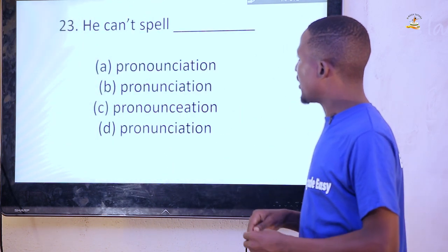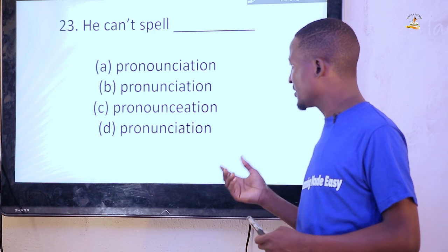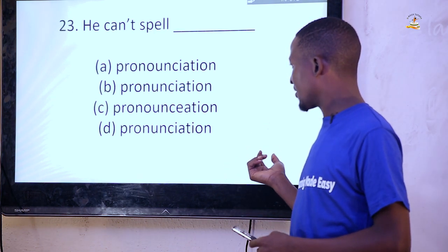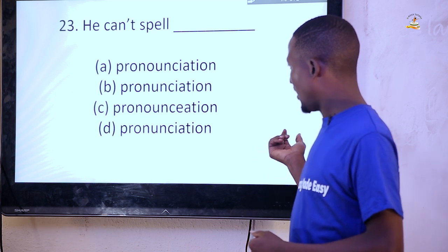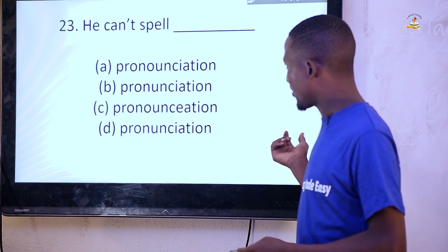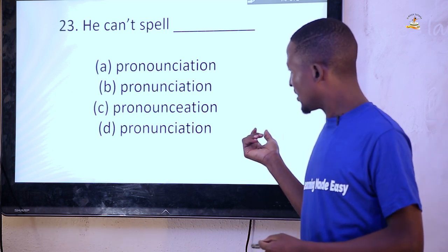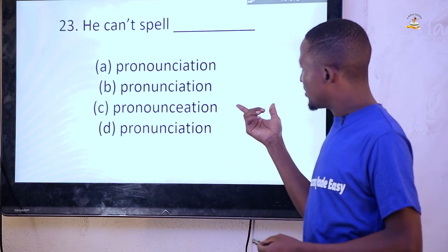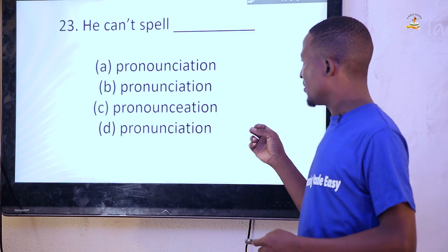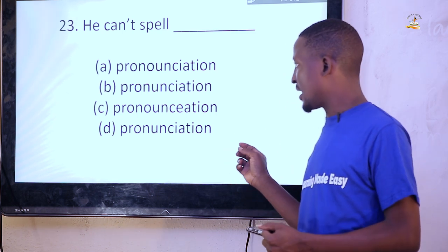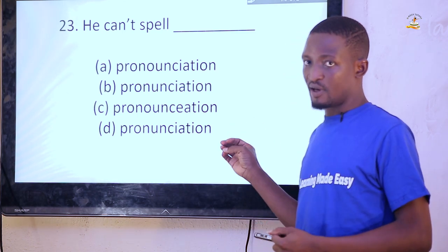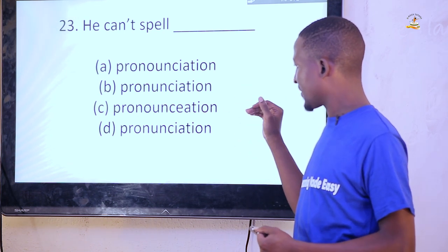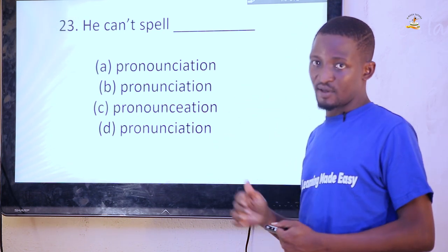This is a question on spelling — pronunciation. Options B and D are spelled the same way. There should be no letter O missing. P-R-O-N-U-N-C-I-A-T-I-O-N — that is 'pronunciation'. So both option B and D are correct there.